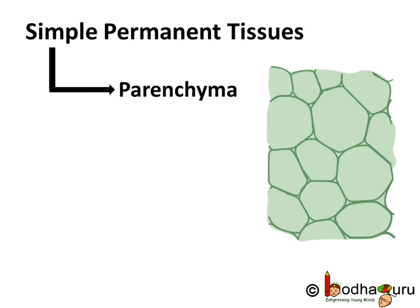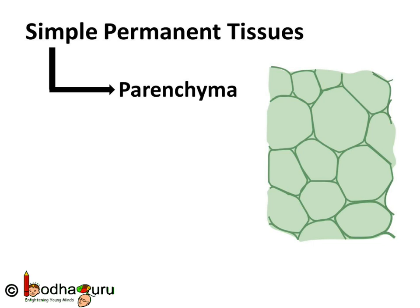Parenchyma tissues are made of relatively unspecialized living cells with thin cell walls. They are the basic packing tissues. If you observe, they are loosely packed, so large spaces are found between the cells — that is, the intercellular spaces are large.